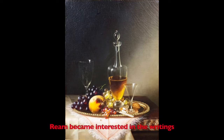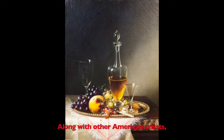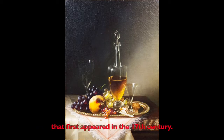Rien became interested in the writings of contemporary art critic John Ruskin, who believed that artists should be true to nature. Along with other American artists, Rien simplified the lavish still life compositions of Dutch painters that first appeared in the 17th century.